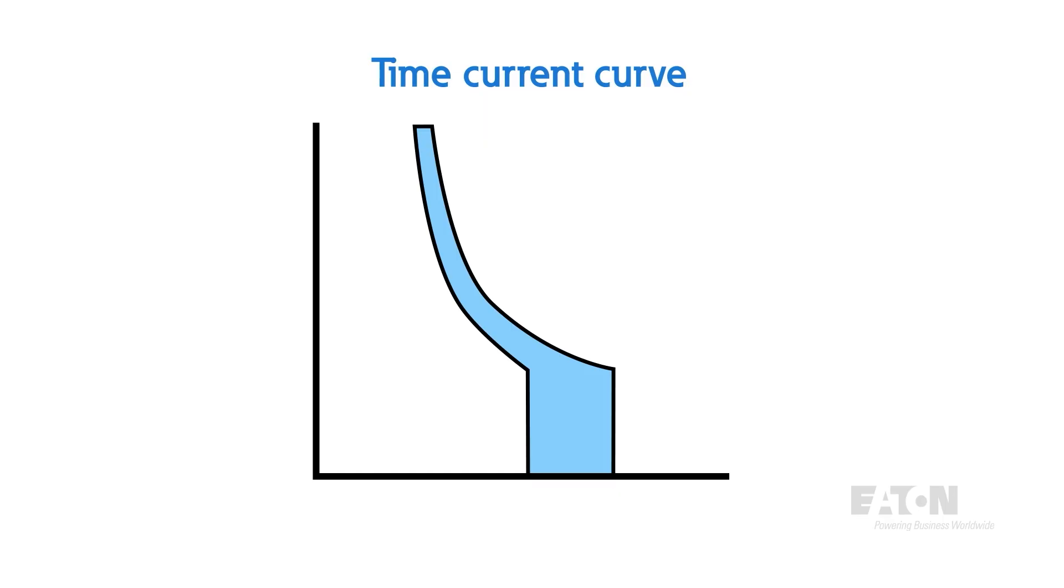This is known as a time-current curve, and it's an extremely important characterization of overcurrent protection devices. On the x-axis, we have load current, and on the y-axis, we have time.